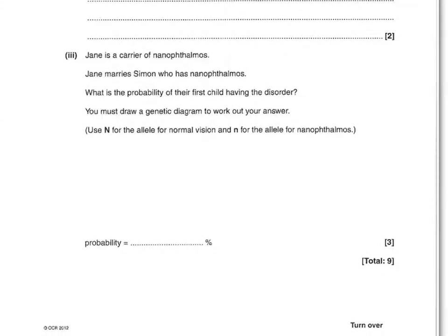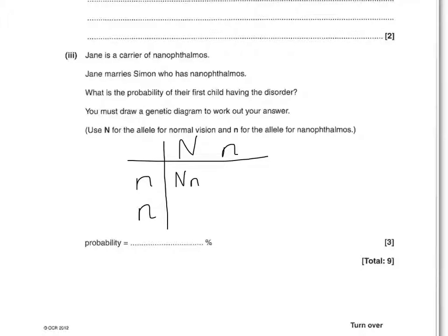Next question: Jane is a carrier of nanophthalmos. Jane marries Simon who has nanophthalmos. What is the probability of the first child having the disorder? You must draw a genetic diagram using capital N for normal vision and lowercase n for the allele for nanophthalmos. Jane is just a carrier, so she has a dominant gene and a recessive gene. But Simon has it, so he must have two recessive genes. Looking at the combinations, two will have it and two won't, so there's a 50% chance of their children getting this condition.